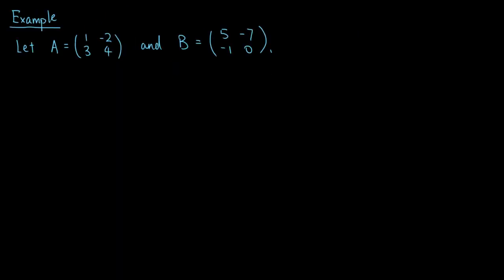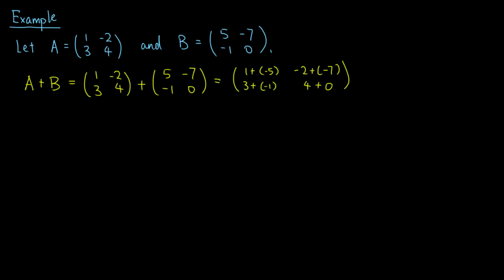Let's look at an example. Suppose A and B are matrices defined as shown. A plus B is the matrix with entries 1, negative 2, 3, 4, plus the matrix with entries 5, negative 7, negative 1, and 0. This equals the matrix with entries 1 plus 5, negative 2 plus negative 7, 3 plus negative 1, and 4 plus 0, which is equal to the matrix with entries 6, negative 9, 2, and 4.